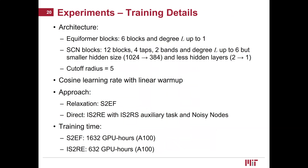The training details are as follows. We use 6 Equiformer blocks with degree up to 1, and 12 SCN blocks with 4 taps, 2 bands, and degree up to 6. We use a smaller version of SCN with smaller hidden sizes and fewer hidden layers. We construct a nearest neighbor graph with a cutoff radius of 5 angstroms. We train networks with cosine learning rate with linear warm-up. For relaxation, we train on the S2EF 2M subset; for the direct approach, we train on the IS2RE dataset with IS2RS auxiliary task and noisy nodes data augmentation. Training time is 1632 GPU hours for S2EF and 632 GPU hours for IS2RE using A100 GPUs.